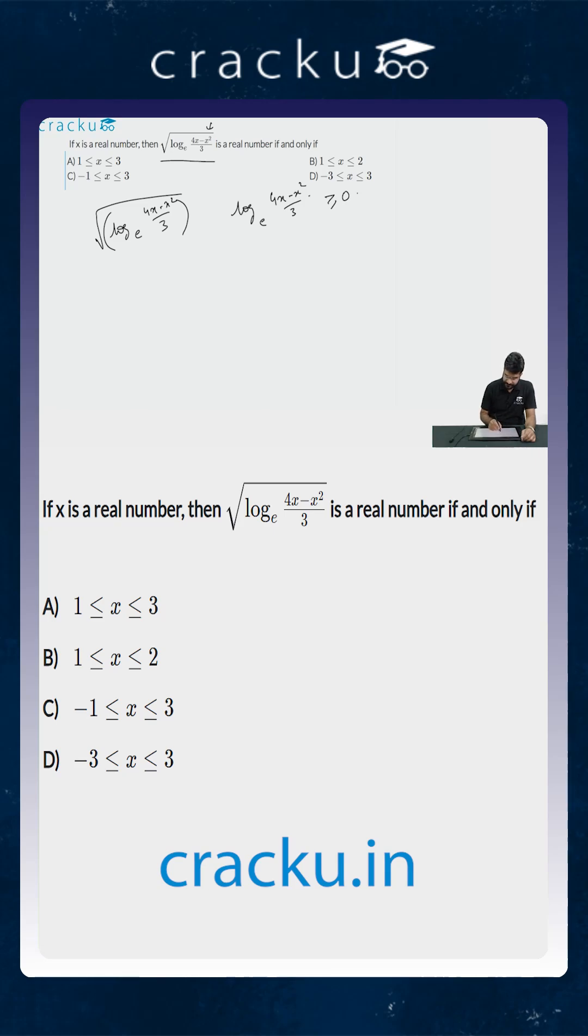Now if you look at this logarithm, the base of this logarithm is e, which is approximately equal to 2.7, that is it is greater than 1. So the logarithm of a number is greater than or equal to 0 only if that number is greater than or equal to 1.